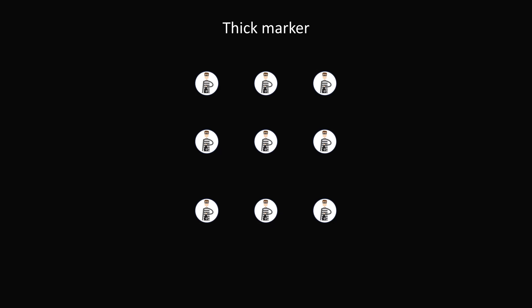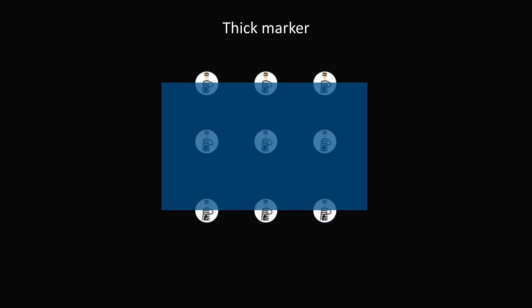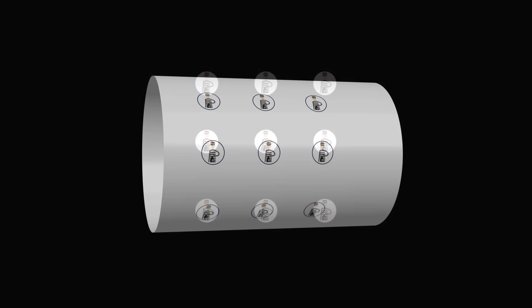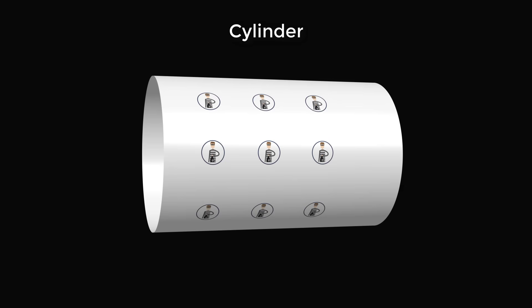But why stop there? You could solve it with just one very thick marker, which will connect all nine dots. And as long as we're thinking outside the box, imagine these nine dots are on a piece of paper — you roll the paper into a cylinder, and then use one line that goes through all nine dots as it spirals around the piece of paper. This is another creative way to solve the problem with just one line.